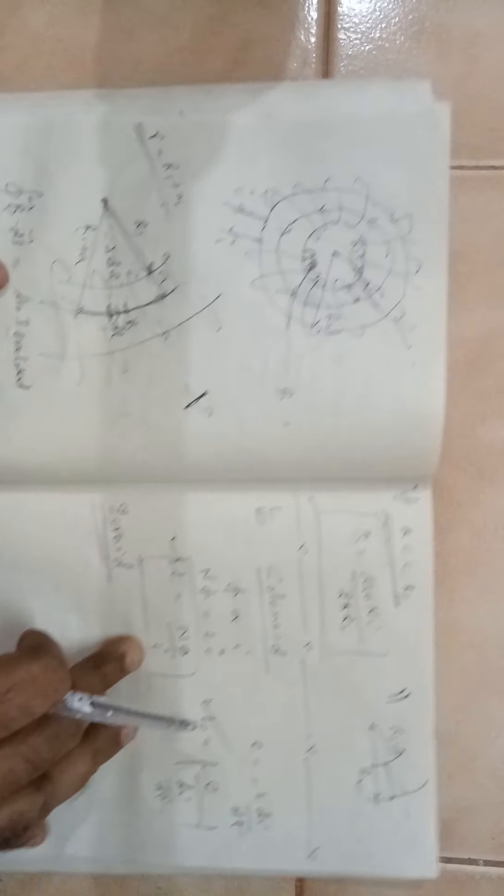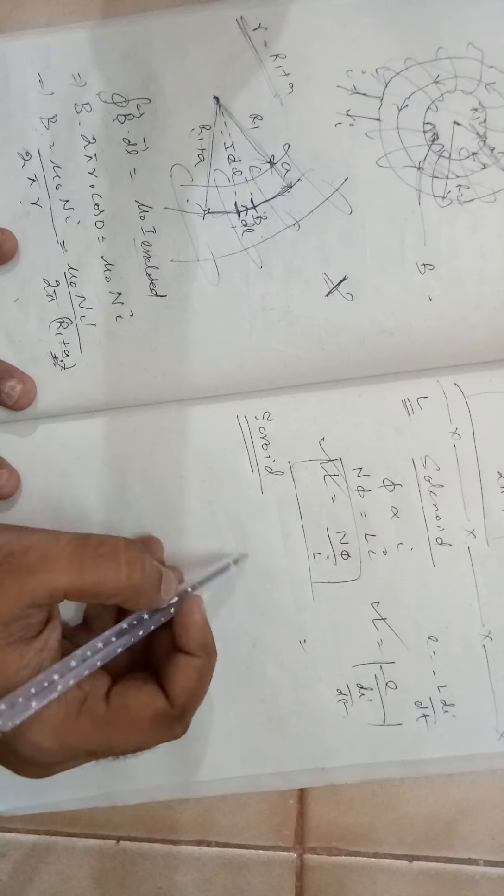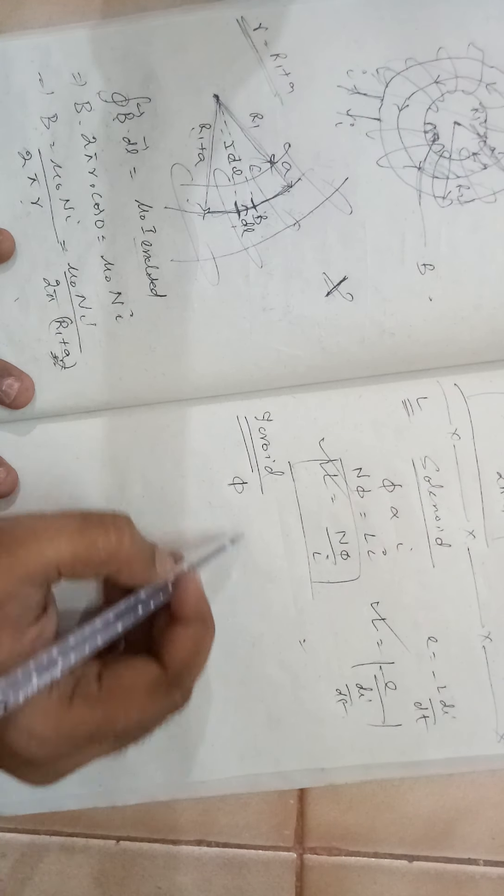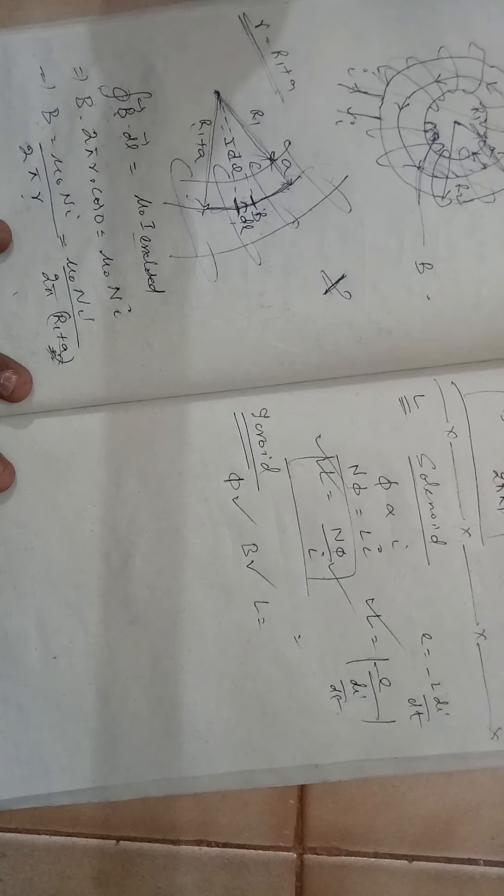Now, a toroid is something like this. If you want to find out L, you are supposed to know phi value. That means you are supposed to know B value. Once this is known, then L will be obtained by this equation.